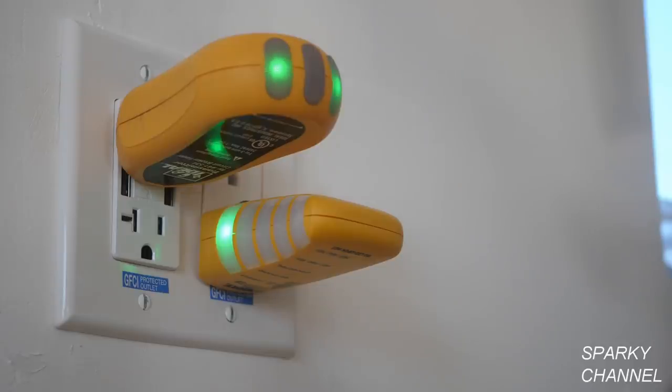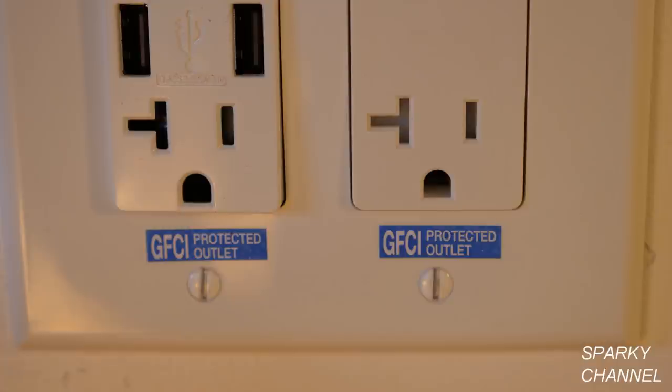And here's the GFCI test. I'm going to press the test button on the GFCI that controls those receptacles. And I press the reset and they come back on. So both of these receptacles have earned their GFCI protected outlet stickers.